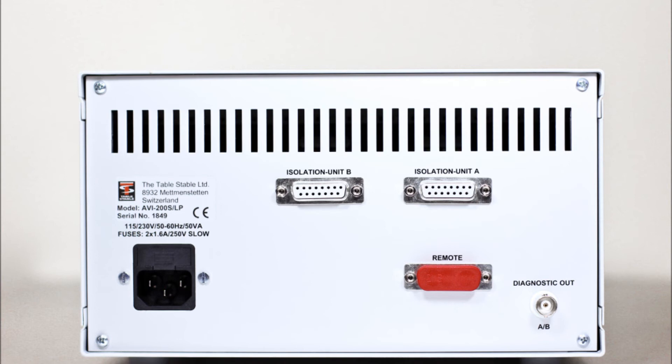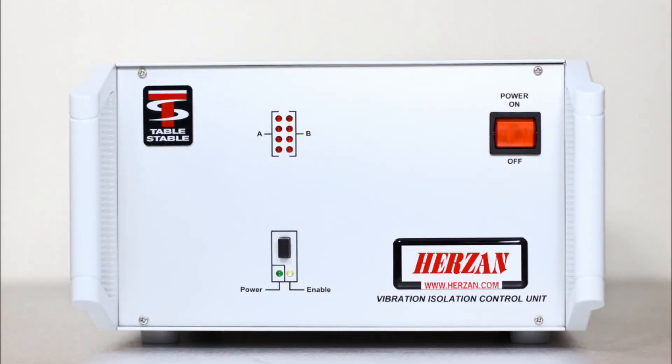Once the D-sub cables are connecting the AVI modules and controller, connect the power cable found on the back of the AVI controller to a power outlet within the room. Power on the AVI controller by pressing the front red power button.